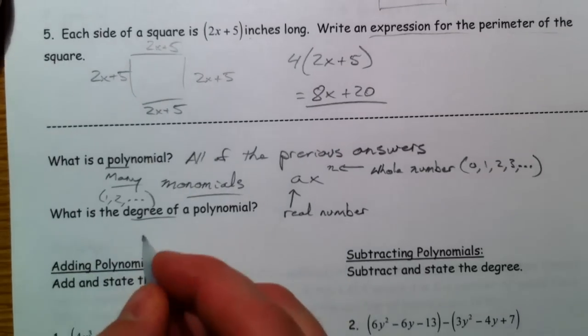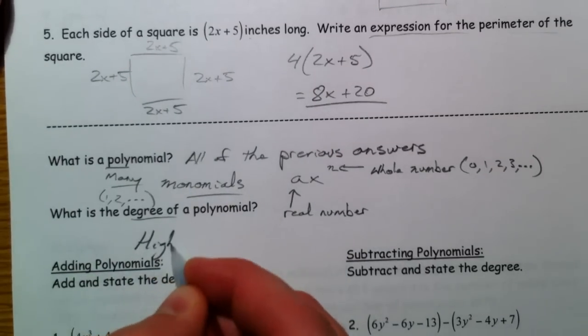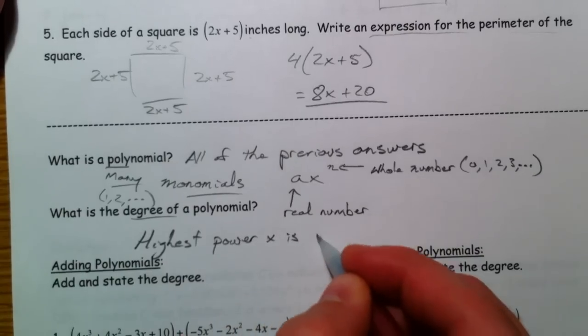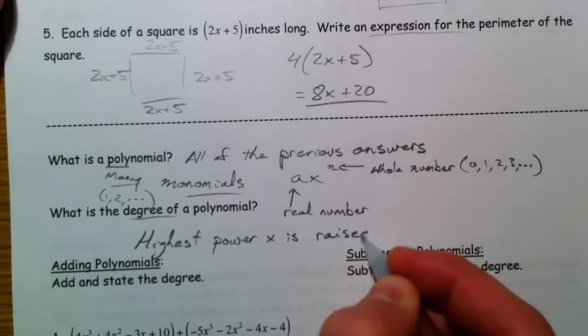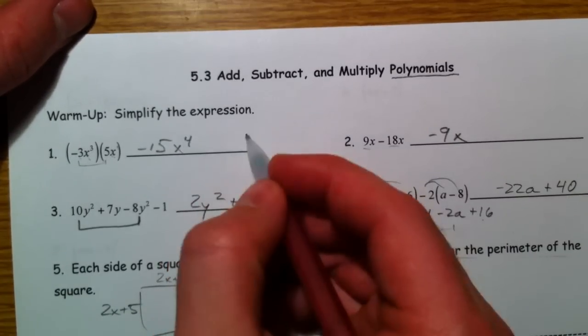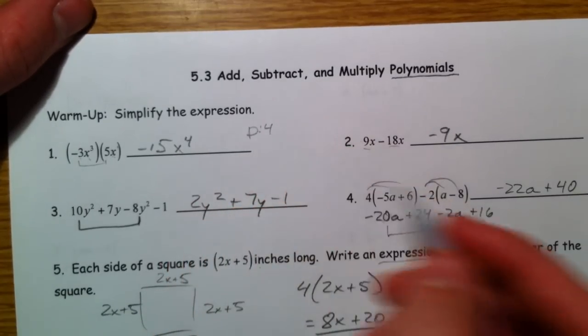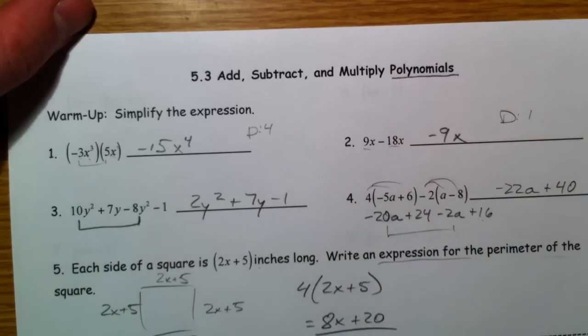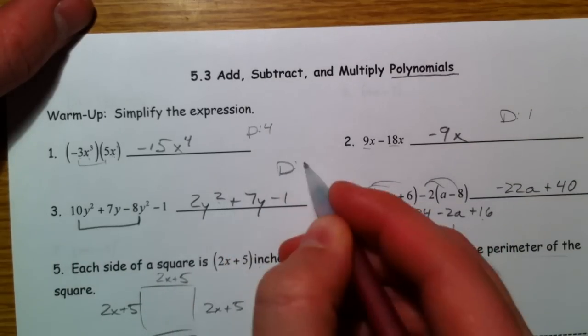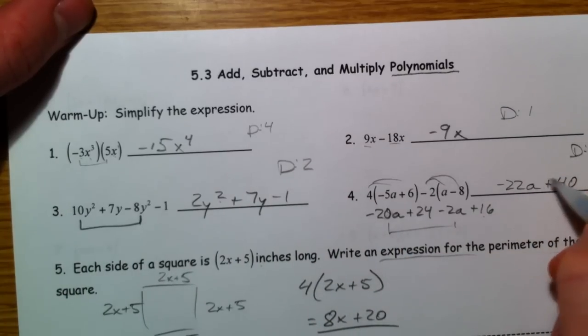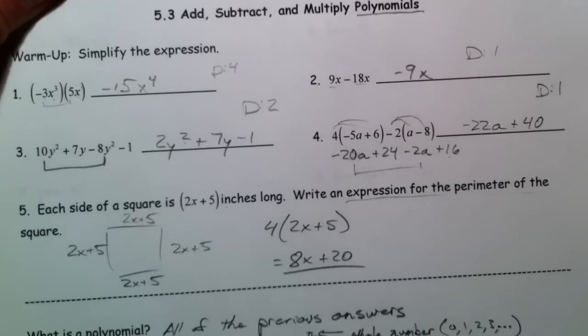Now, the degree of a polynomial, that's the highest power x is raised to. So in this first one, the degree of the first one was 4. Degree of this one, 1. Degree of this one, 2. In this case, it's y. And in this case, the degree, a is raised to the first power.